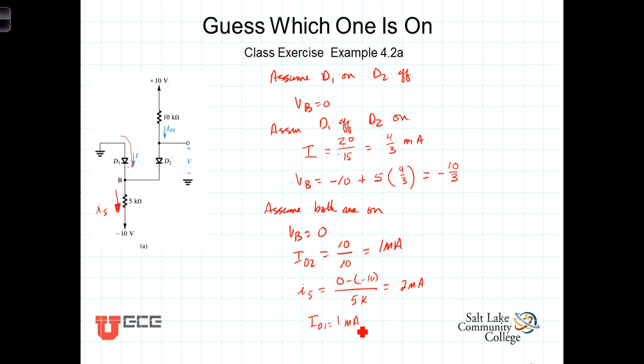Can I sub D equal 1 milliamp? Sure, the diode's going in the right direction, the diode's coming this direction, allowing current to flow that direction. And certainly you could get 1 milliamp coming in there. So this assumption that they're both on leads to no discrepancies, and that's the correct answer.